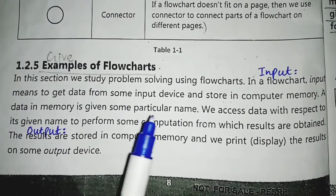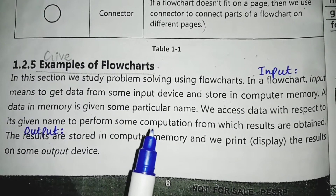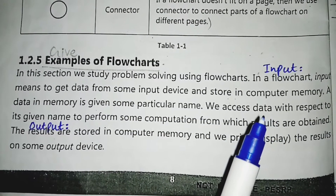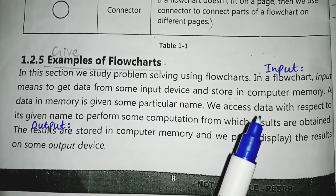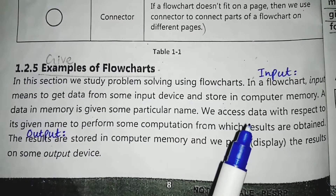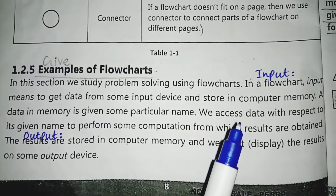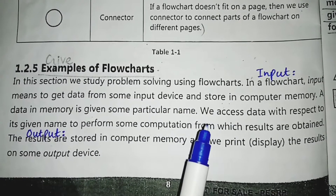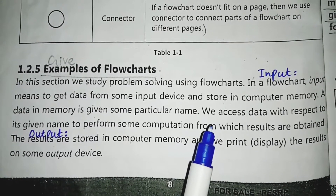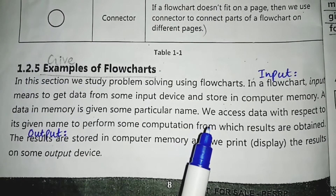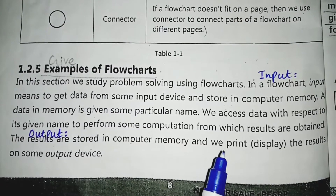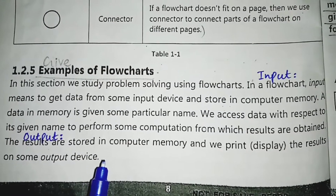We access data with respect to its given name to perform some computation, from which results are obtained. Input data particular name ke saath computer memory me store hota hai, aur jab bhi hume is input data pe operations perform karne hote hain, hum is data ko us name se access karte hain jis name se ye memory me store hai. After processing, the result is called output. The results are stored in computer memory and we print them on some output device.